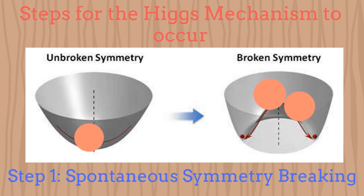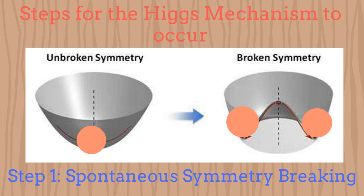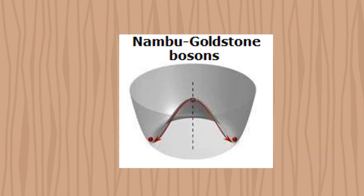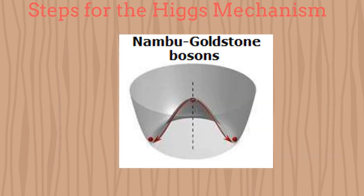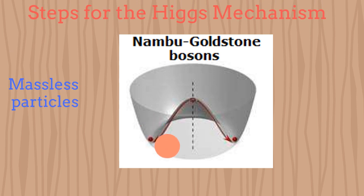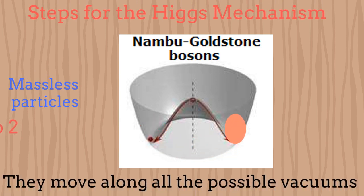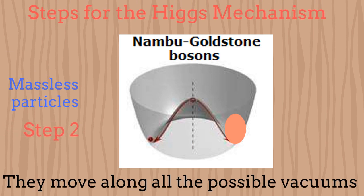The steps for the Higgs Mechanism to occur are the following. Step 1: a local symmetry, or equivalently a gauge symmetry, has to be spontaneously broken. Step 2: only if the broken symmetry is continuous and not discrete, then some massless scalar particles called Nambu-Goldstone bosons would appear.